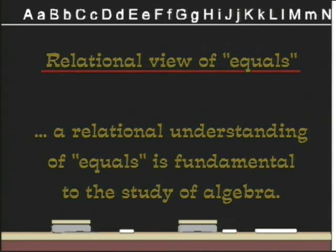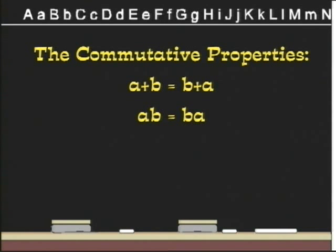Consider the following properties for addition and multiplication. The commutative properties: A plus B equals B plus A, and AB equals BA.